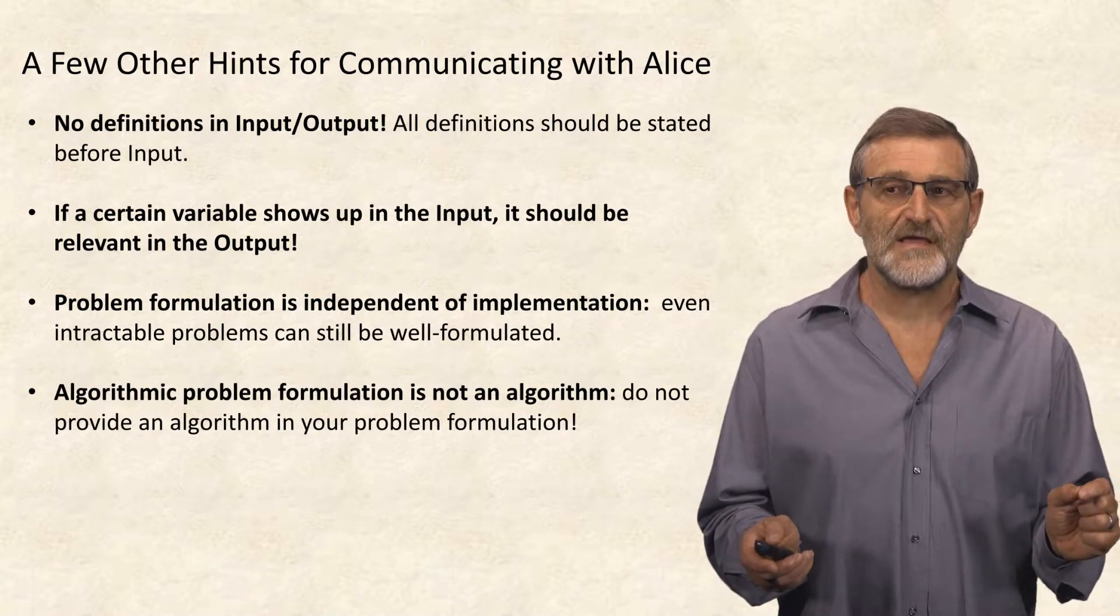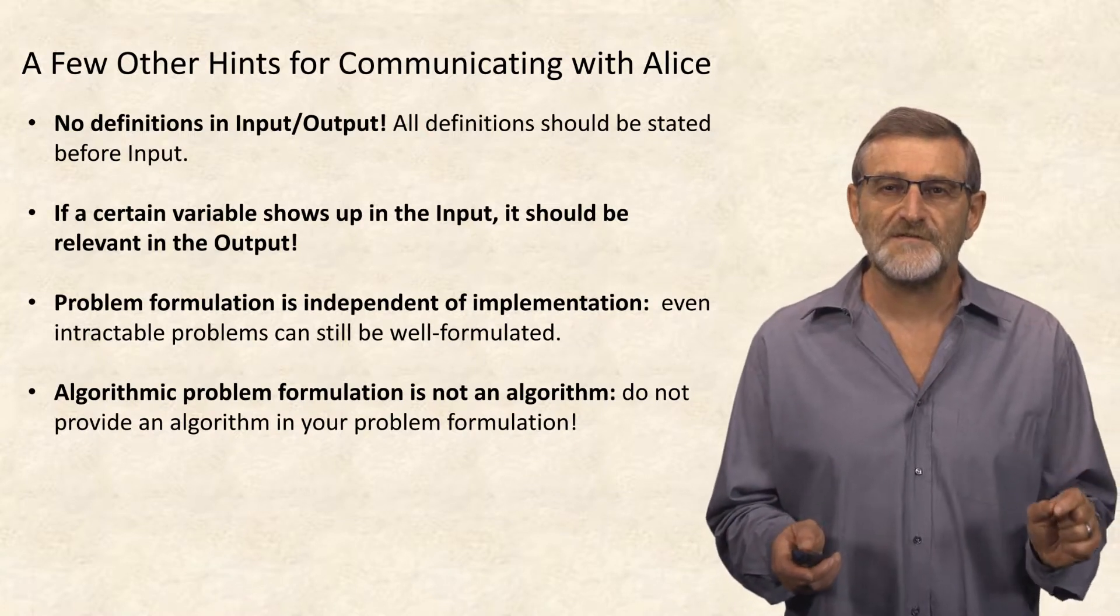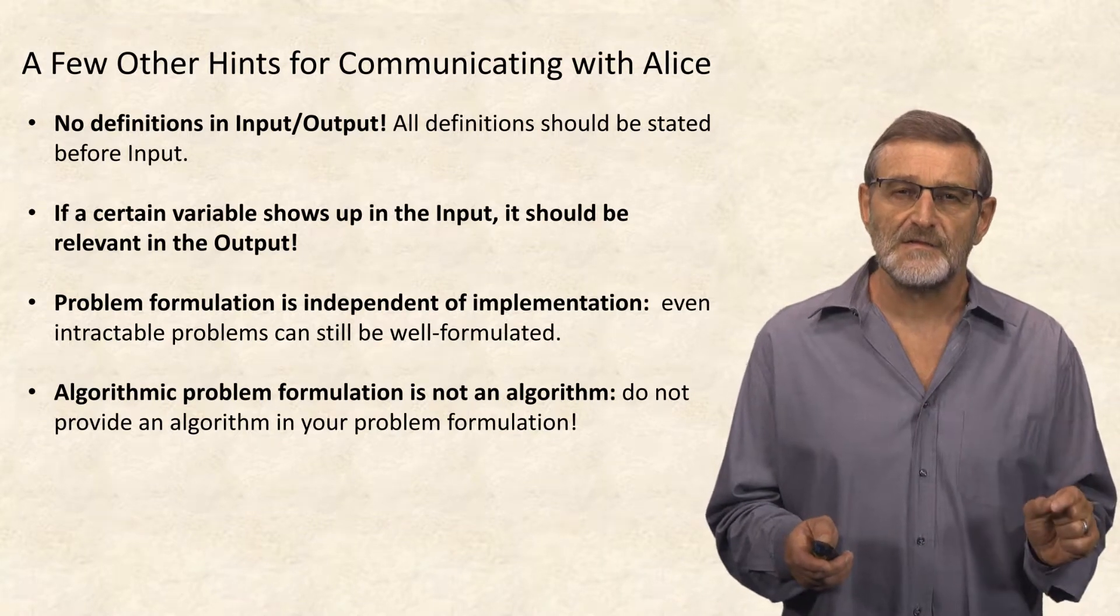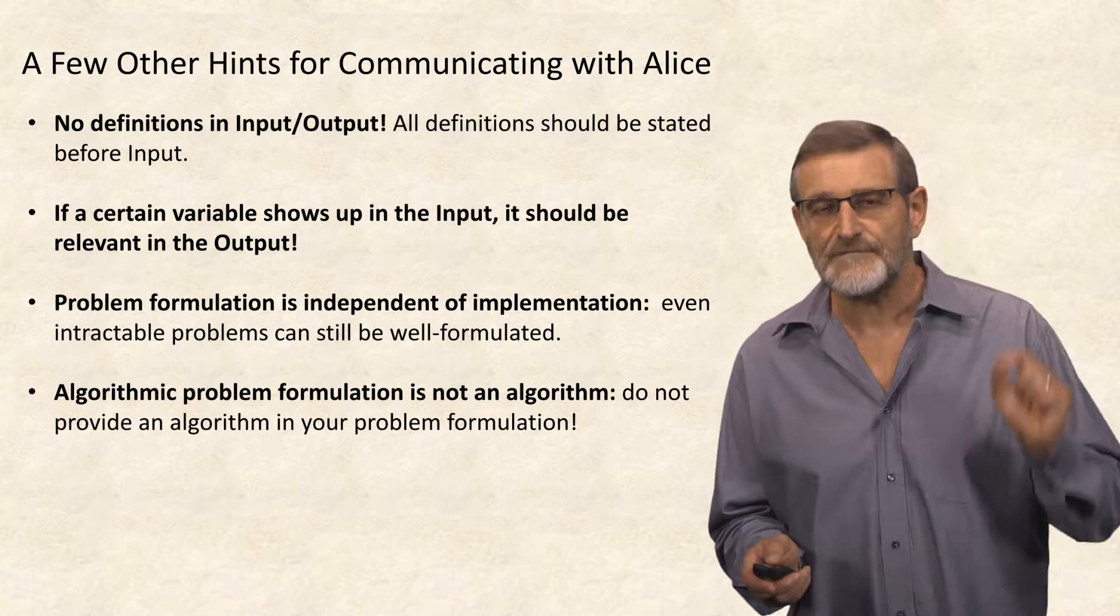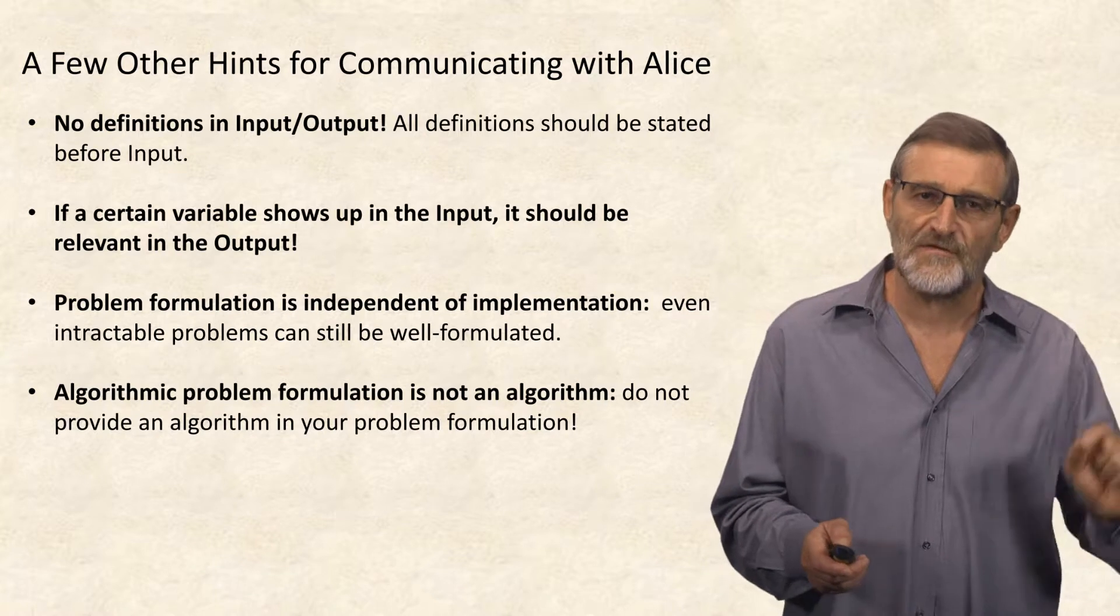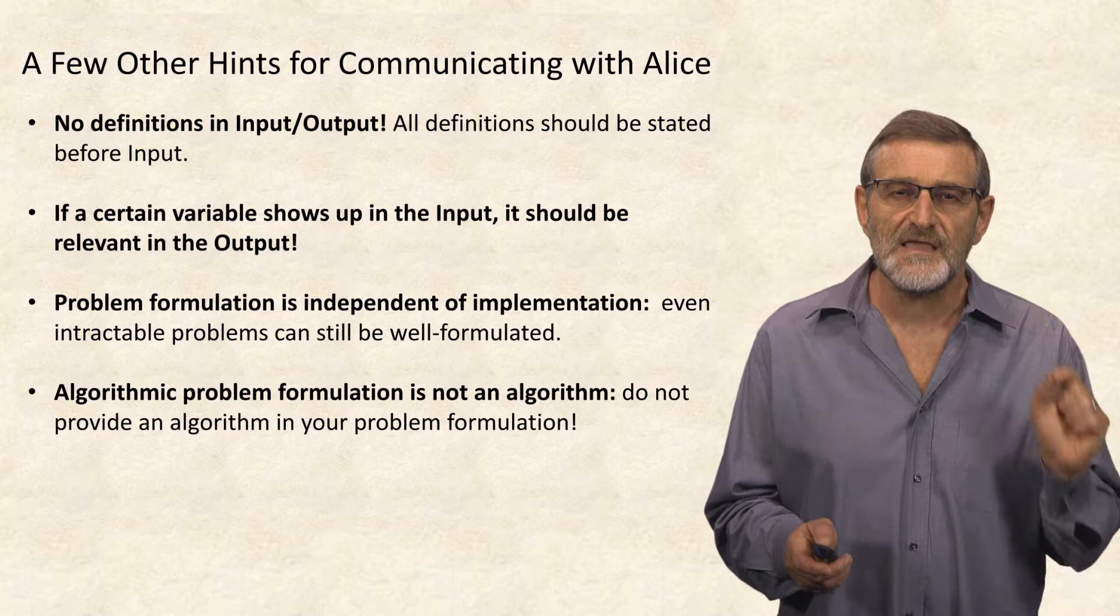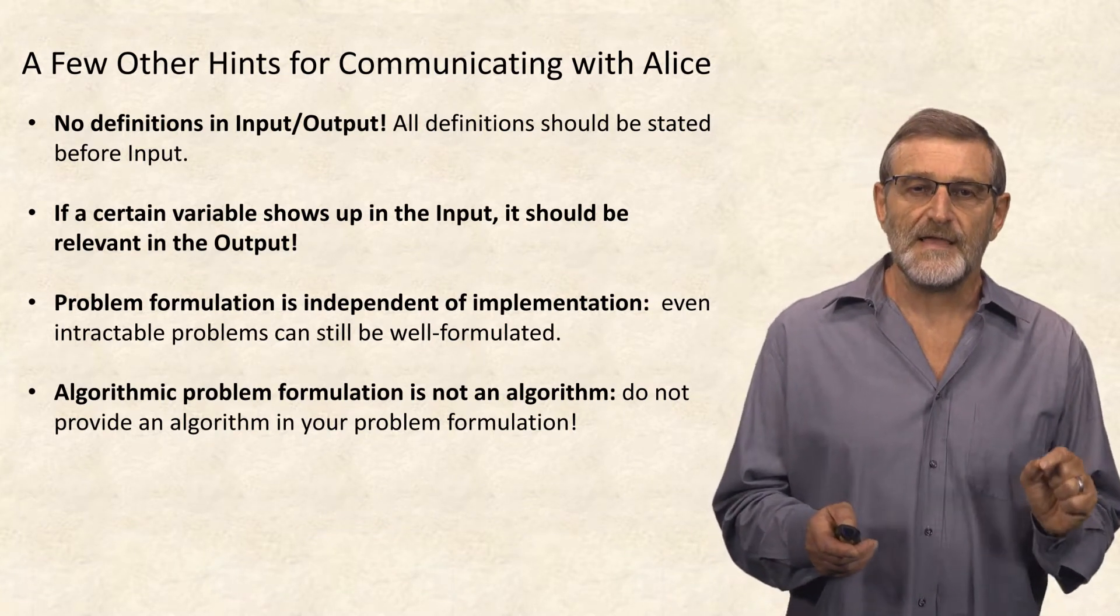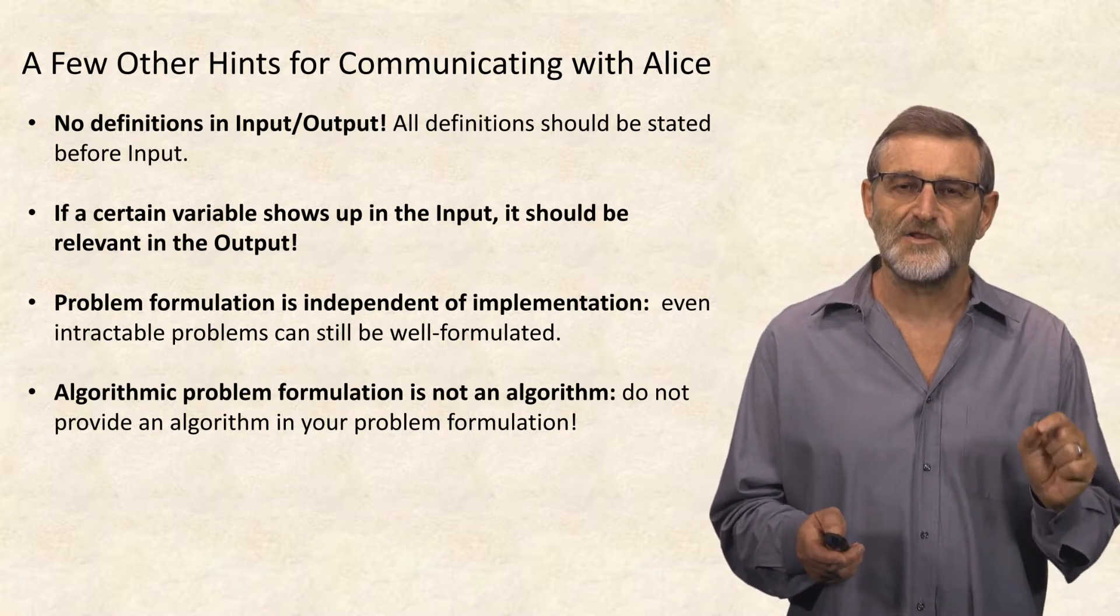A few other hints for communicating with Alice. No definitions in input and output. All definitions should be stated before input. If a certain variable shows up in the input, it should be relevant in the output. If you have a gun hanging on the wall, at some point it should fire. Problem formulation is independent of implementation. Even intractable problems can still be well formulated. An algorithmic problem formulation is not an algorithm. Do not provide an algorithm in your problem formulation.